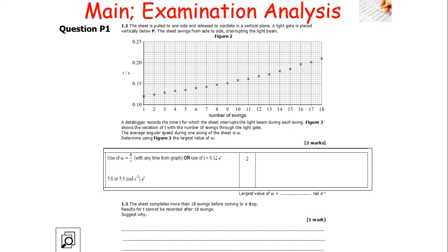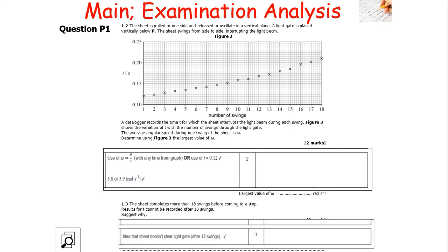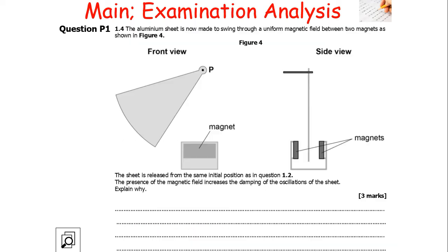The sheet completes more than 18 swings before coming to a stop. The result of T cannot be recorded after 18 swings because the sheet will not clear the light beam after 18 swings due to the effect of damping reducing the amplitude.